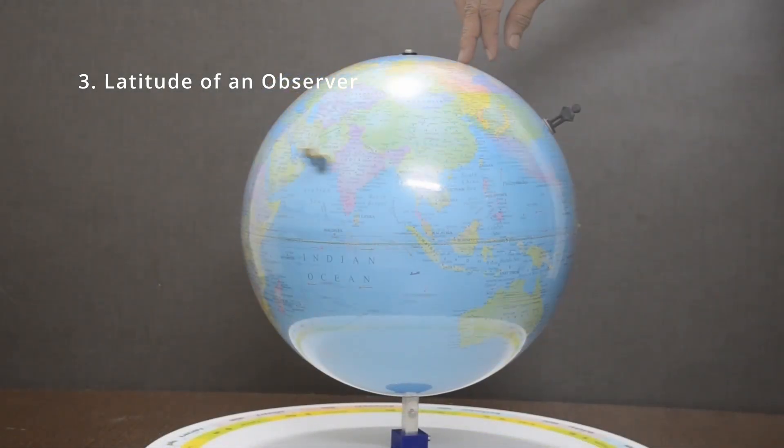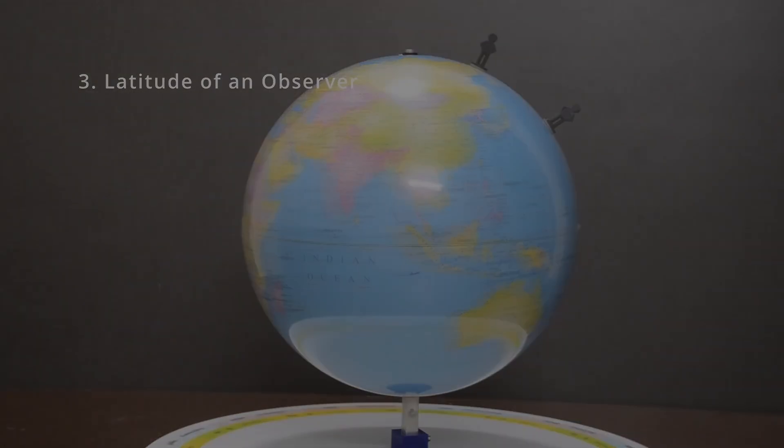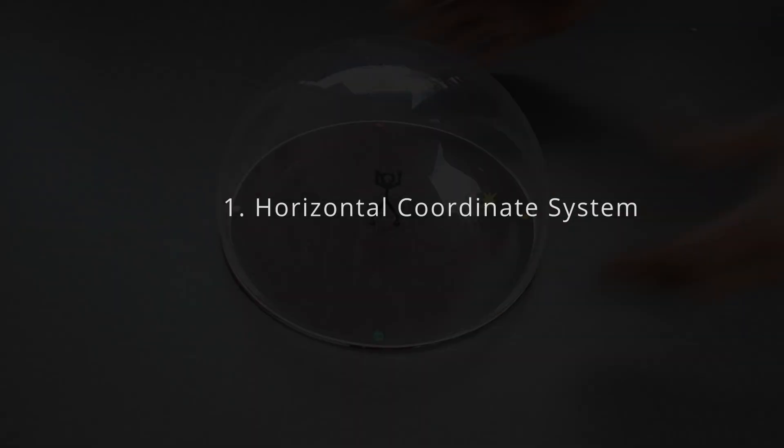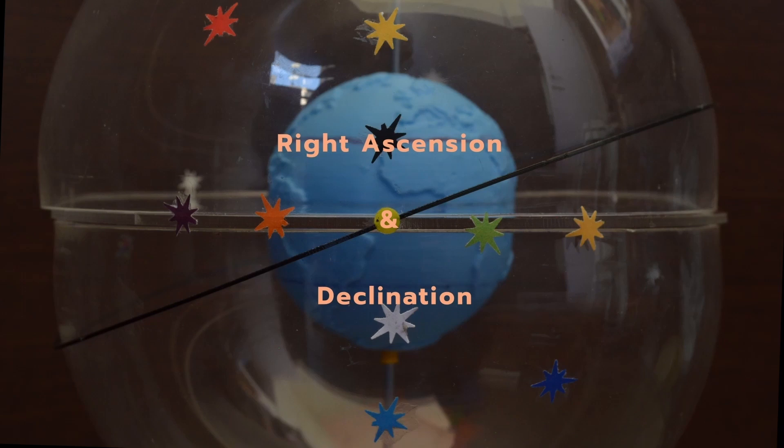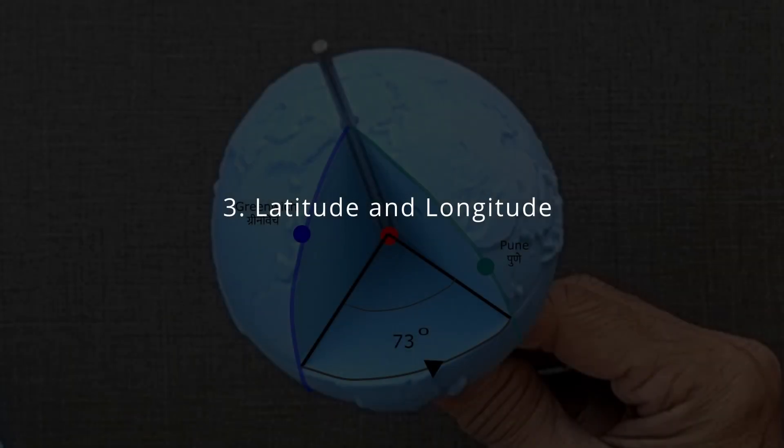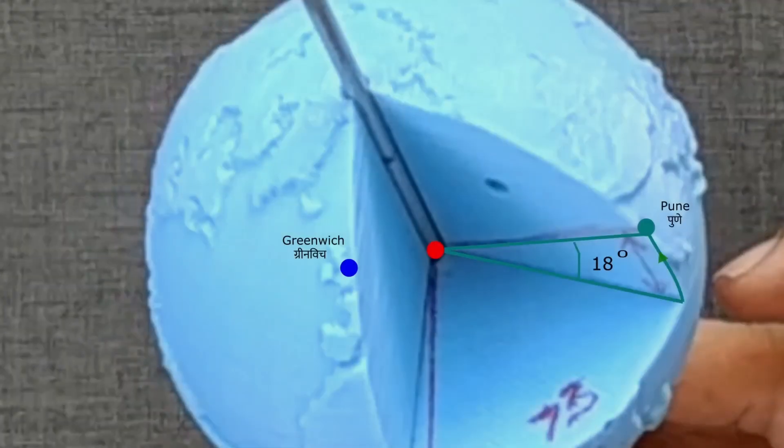As usual, let us start from the basics. I assume that you are familiar with four key concepts: horizontal coordinate system, equatorial coordinate system, latitude and longitude, and phases of the moon.